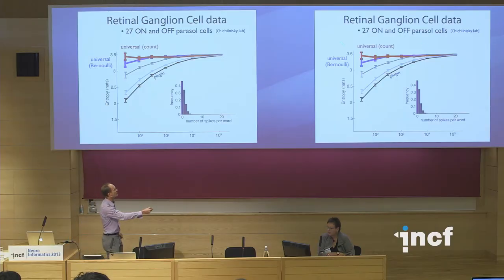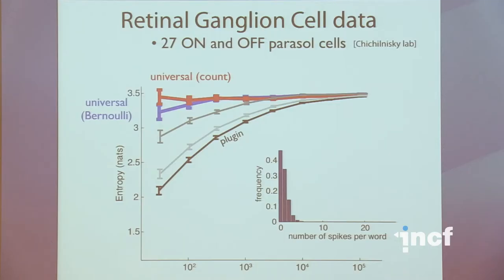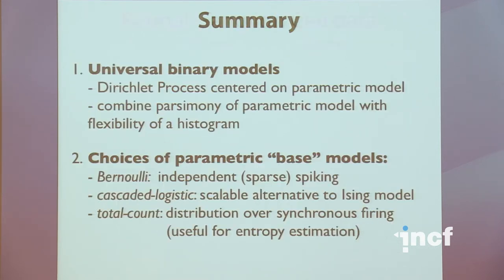Here's an application to real data from E.J. Shelnitsky's lab — 27 on and off parasol cells. Even with very small amounts of data, these universal estimators converge very quickly, whereas the plug-in estimator requires several orders of magnitude more data before you get an accurate estimate. To summarize: I've talked about one particular way to build a flexible model that can scale to large data sets — the universal binary model. The basic idea is a Dirichlet process centered on a parametric model that reflects something we believe about spike trains. I've talked about three base measure possibilities: Bernoulli, cascaded logistic, and the total count model, which is very useful for entropy estimation.